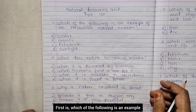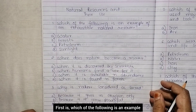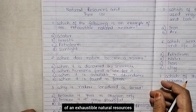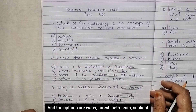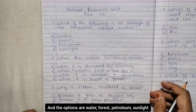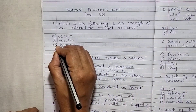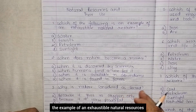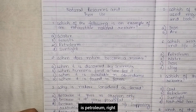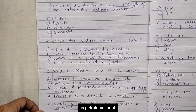First: which of the following is an example of an exhaustible natural resource? The options are water, forest, petroleum, sunlight. The example of an exhaustible natural resource is petroleum.